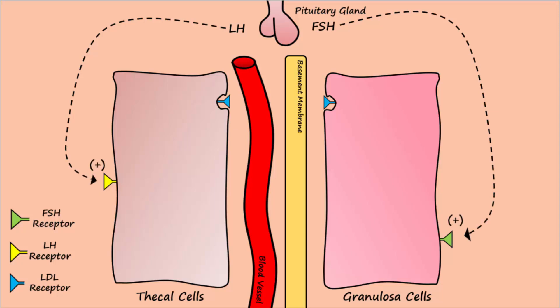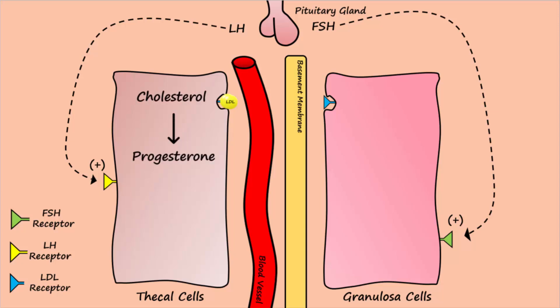The thecal cells express LH receptors, which when activated by LH, stimulate the thecal cell to increase absorption of LDL cholesterol from the blood. The cholesterol is then used by the thecal cells to synthesize steroids like progesterone.